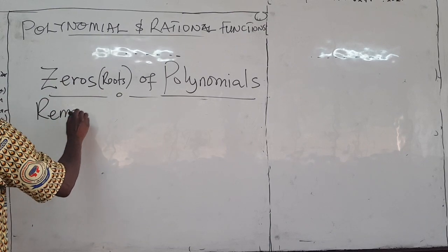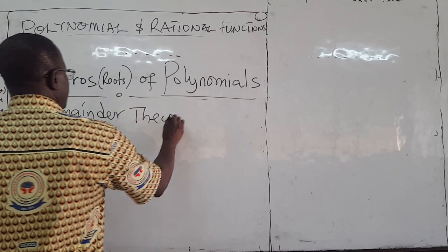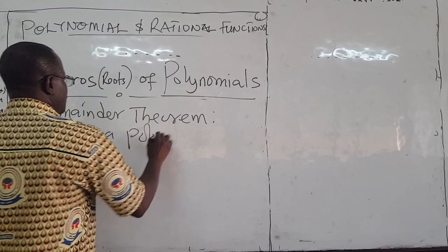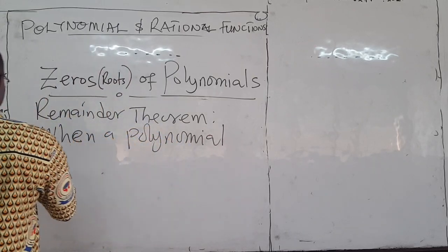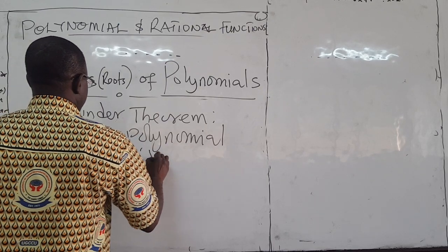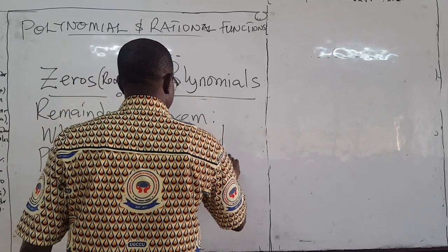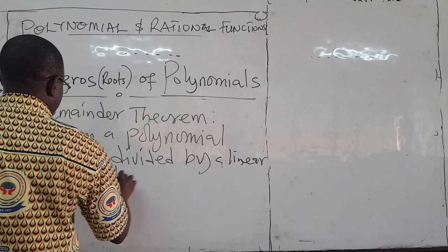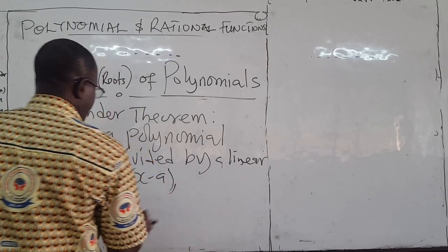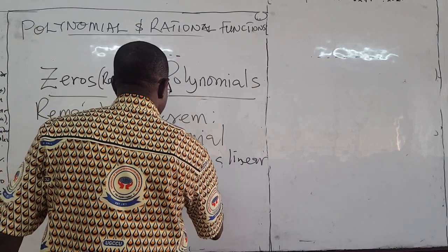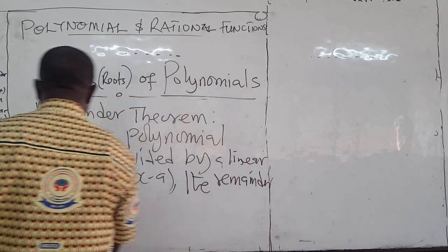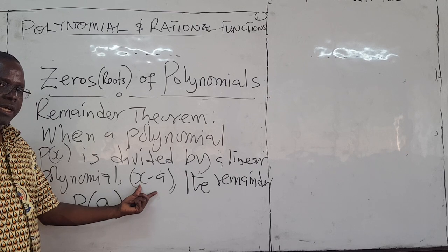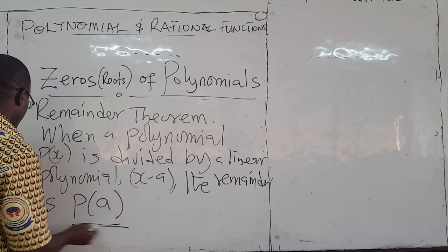The remainder theorem states that when a polynomial P of x is divided by a linear polynomial x minus a — where a could be positive or negative — the remainder is given by P of a. If we set x minus a equal to zero, we get x equals a, and plugging that into P gives you the remainder.